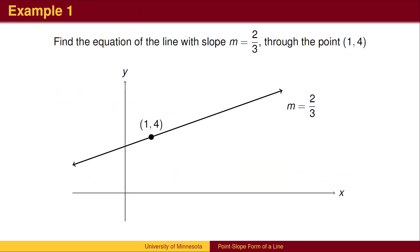Here is an example. We are given the slope of the line and a point on the line. We could graph the line by counting out the slope and connecting the dots. From the graph, we could try to find the y-intercept and use the slope-intercept form of a line. However, sometimes this is hard to do.